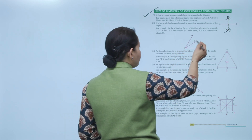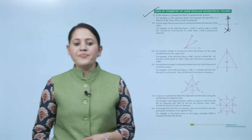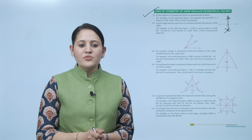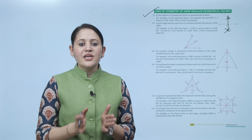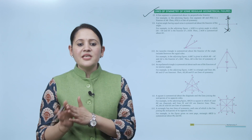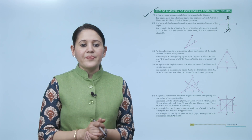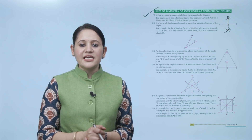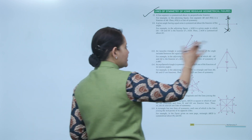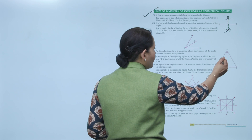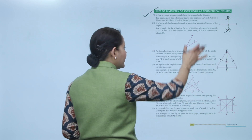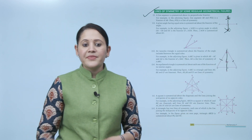An isosceles triangle is symmetrical about the bisector of the angle included between the equal sides. For example, in the given figure, triangle ABC has AB equal to AC, and AD is the bisector of angle BAC. Then AD is the line of symmetry of triangle ABC. This is the line of symmetry for an isosceles triangle.